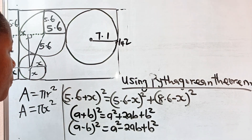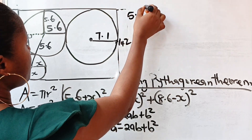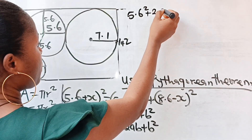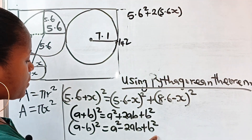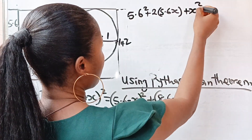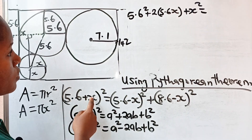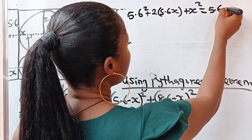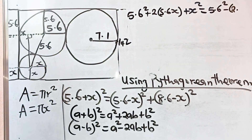From what we have, (5.6 + x)² expands to 5.6² + 2(5.6)(x) + x². Then (5.6 − x)² expands to 5.6² − 2(5.6)(x) + x².